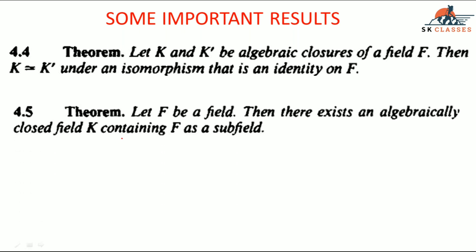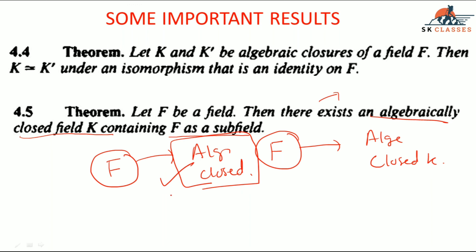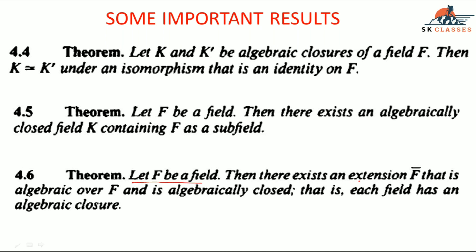The next result: let f be a field. Then an algebraically closed field definitely exists — its existence is guaranteed. You can find an algebraically closed field that contains f as a subfield. Moreover, each field has an algebraic closure — that is, an algebraic extension of f that is algebraically closed.